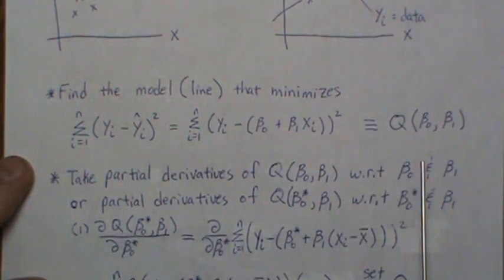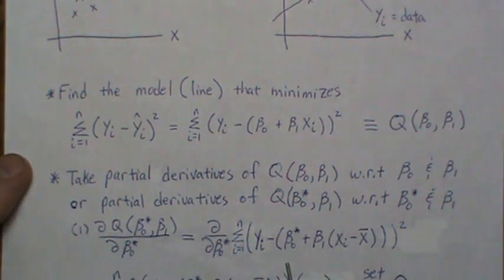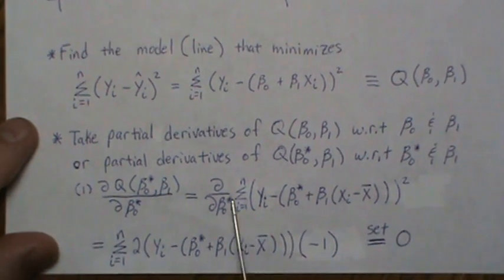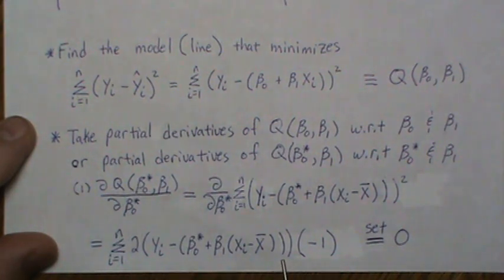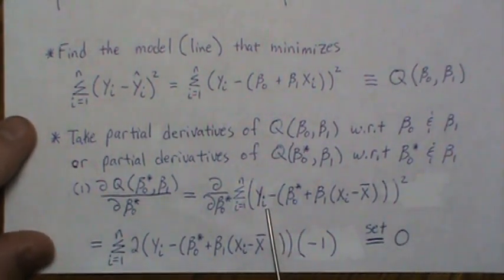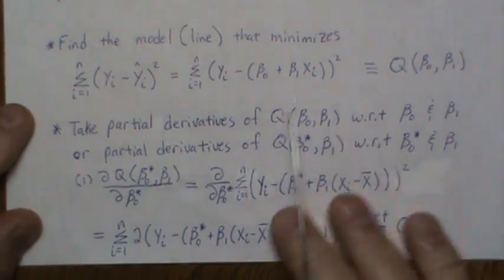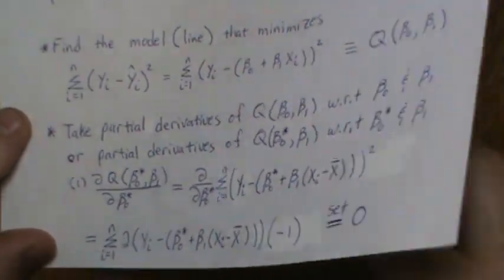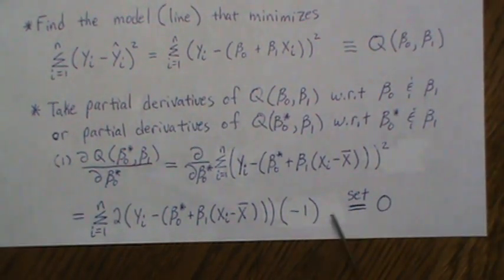Plugging in the centered model, applying the chain rule: the exponent 2 comes out front, we subtract 1 from the exponent, and the derivative with respect to beta-0-star is minus one. Setting this equal to zero and multiplying by minus one, then dividing by 2, we take the sum inside.